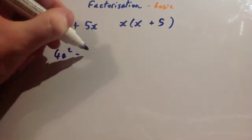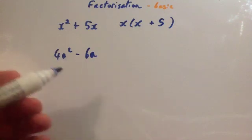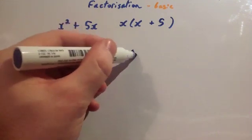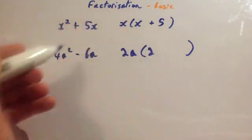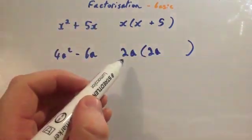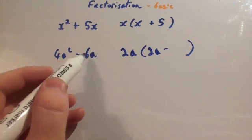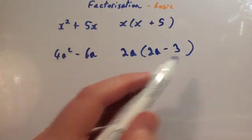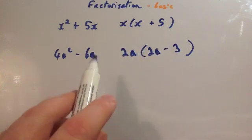Next: 4a² - 6a. This has two things you can divide both terms by. First, 4 and 6 are both divisible by 2. Also, a² and a are both divisible by a. So 2a goes outside the brackets. 4a² ÷ 2a = 2a, and 6a ÷ 2a = 3. So the answer is 2a(2a - 3). Check: 2a times 2a is 4a², and 2a times 3 is 6a. Correct.